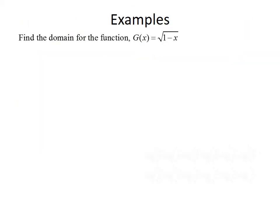Let's look at a couple more examples. First, let's find the domain for the function G(x) equals the square root of 1 minus x. For this function, we're worried about the rule that we cannot have a negative number underneath an even radical. So to find the domain, we set what's underneath the radical greater than or equal to 0: 1 minus x must be greater than or equal to 0. Adding x to both sides gives 1 is greater than or equal to x. So our domain will be the interval from negative infinity to 1, where 1 is included since it was greater than or equal to.